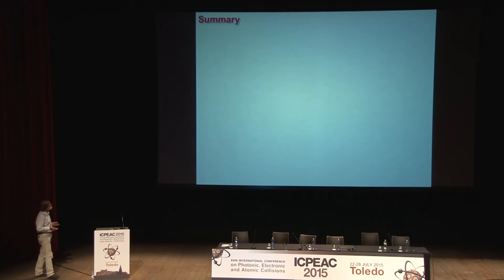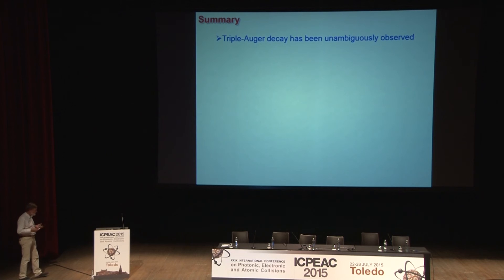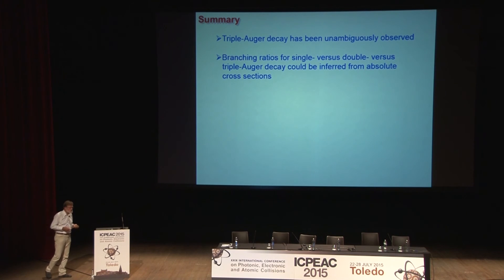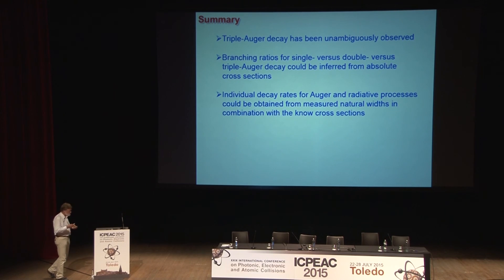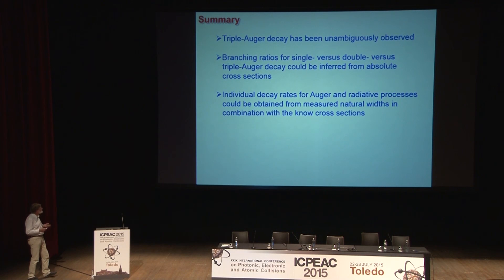So we clearly have seen evidence for triple Auger decay in defined terms of the carbon 1+ ion with the K vacancy. Since we measure absolute cross-sections, we can provide branching ratios for single versus double versus triple Auger decay. We have also measured the natural line widths of these resonances, from which we conclude the oscillator strength and thereby the transition rates. Since we have the ratios between the three decay processes, we can provide absolute individual decay rates for single, double, and triple Auger decay.